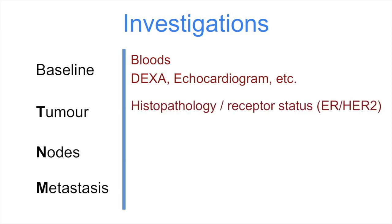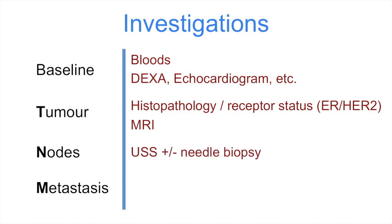When it comes to the tumour itself, biopsies or the surgically resected specimen are sent for immunohistochemistry studies. This will determine the oestrogen and HER2 receptor status, which guides the use of adjuvant hormone therapy. Imaging of the breast with an MRI isn't needed unless we are considering breast preservation surgery, in which case we need this to assess the size and position of the tumour. When it comes to lymph node status, we can perform an ultrasound of the axilla to see if there are any suspicious-looking nodes. If so, a guided lymph node needle biopsy can be performed and this will guide management.